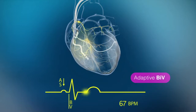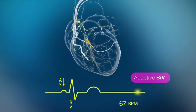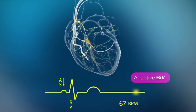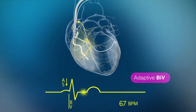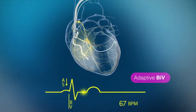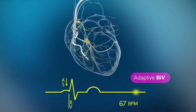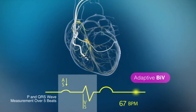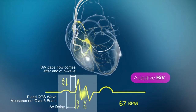Atrioventricular synchrony, in turn, requires the left ventricle to contract after the left atrium. The timing of the contractions can be determined by measuring the duration of the p-wave and adjusting the atrioventricular delay accordingly.